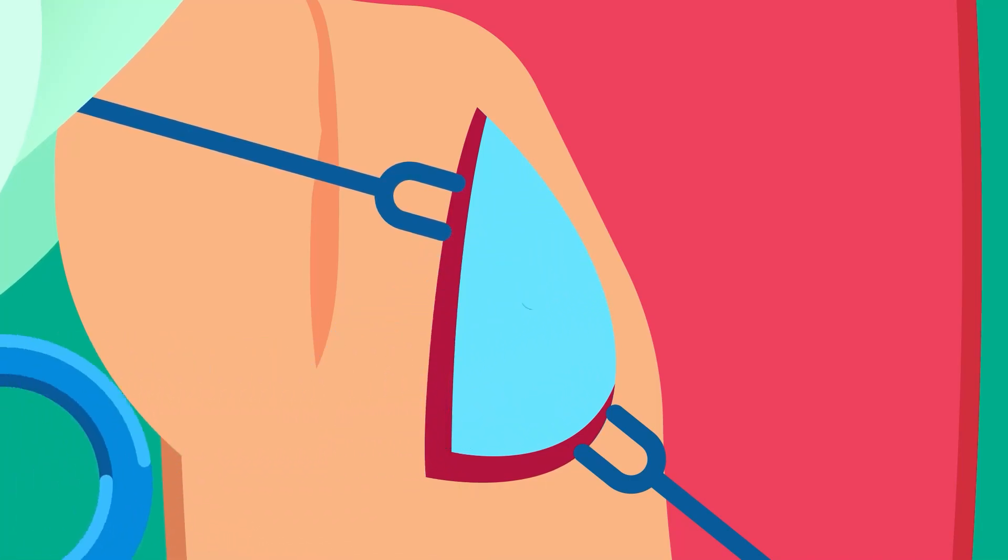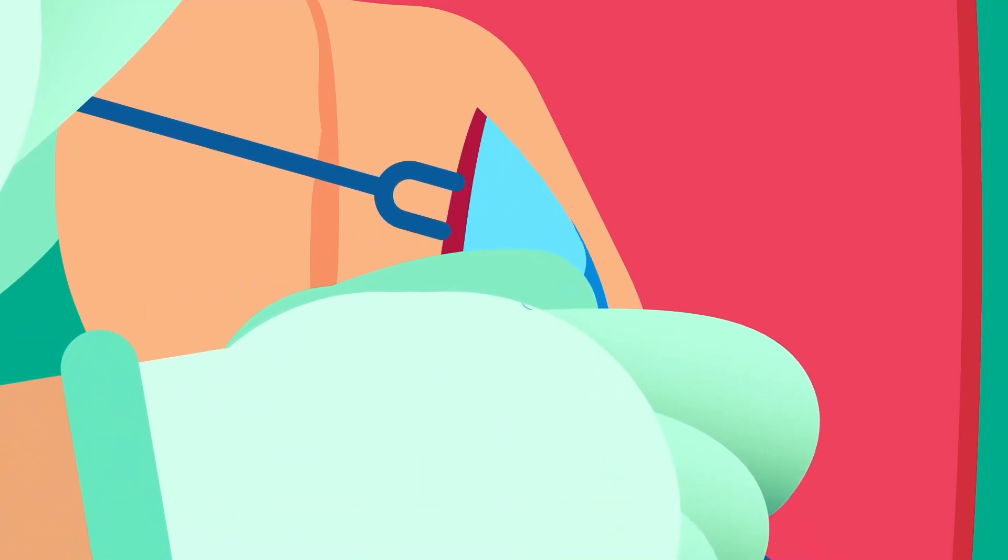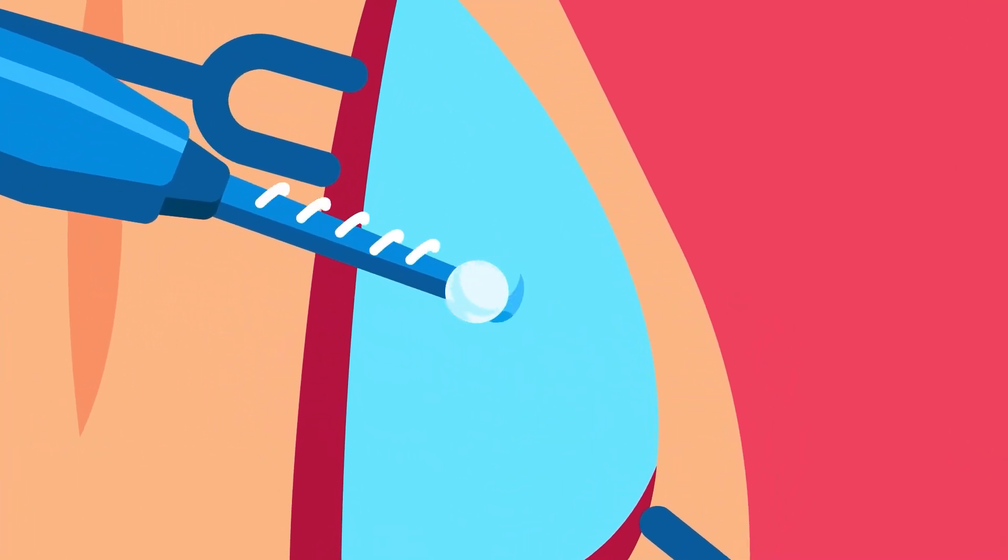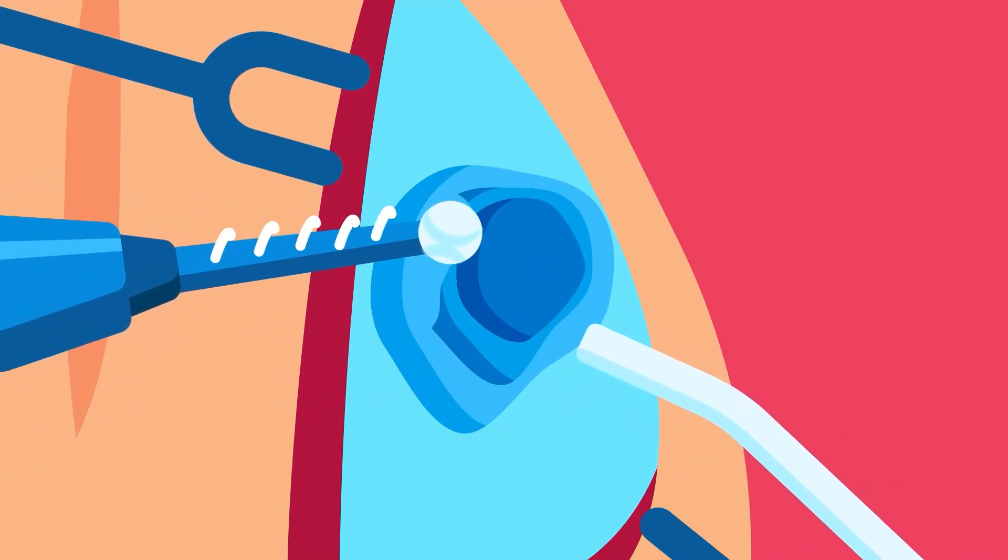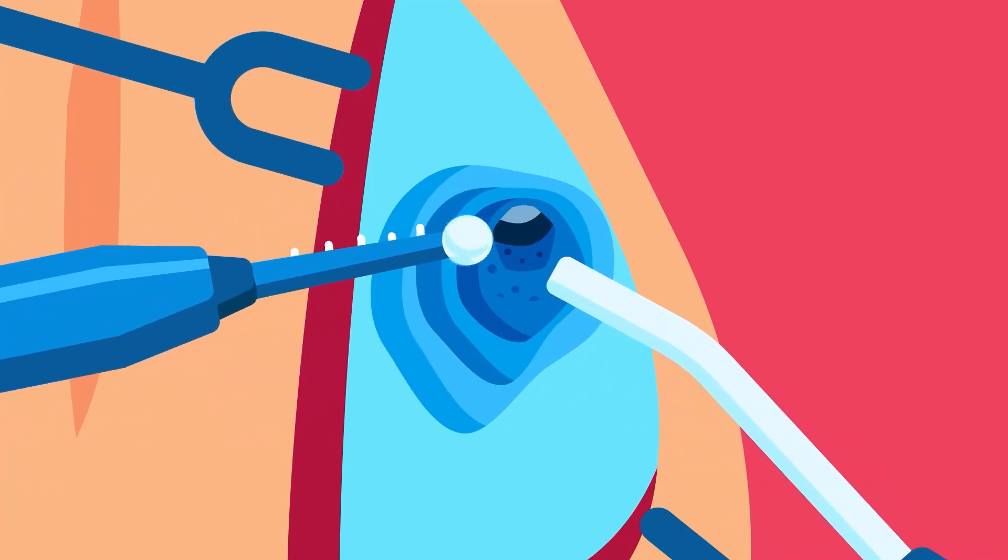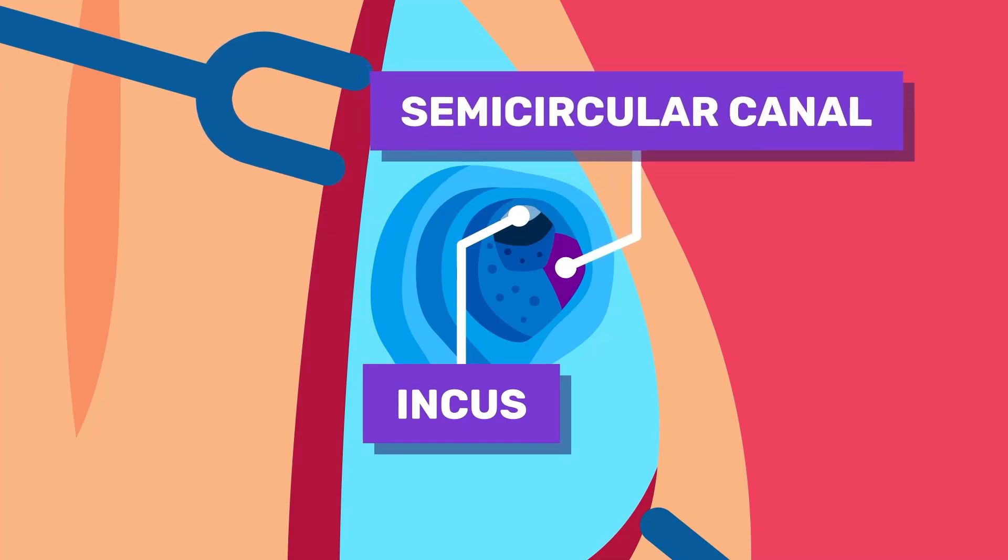Next, the mastoid bone is drilled. Suction and irrigation are deployed to prevent tissue damage. The drilling continues until the short process of the incus and semicircular canal are visible.